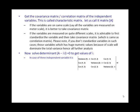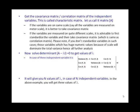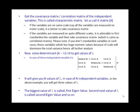In the matrix, the variances are the diagonal components and the covariances are the off-diagonal components. When you solve this determinant in the case of three independent variables, you get three values of lambda. In general, for n independent variables you get n eigenvalues. The largest is called the first eigenvalue, the second largest is the second eigenvalue, and so on.